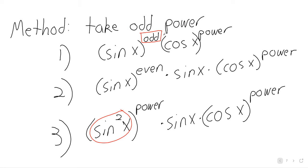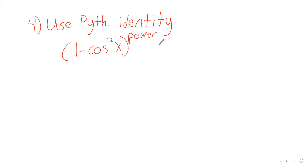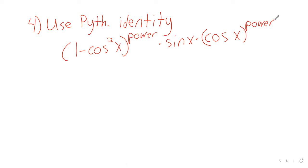When we use the Pythagorean identity here, the sine squared becomes expressed in terms of cosines. We've got the lone sine we pulled out, and the other trig function that we've basically been ignoring. At this point we perform a u-substitution.